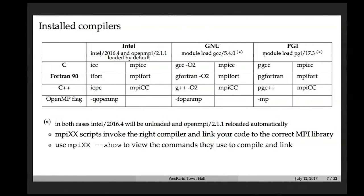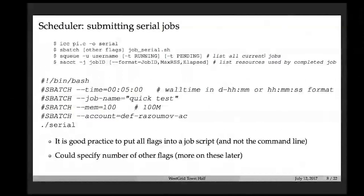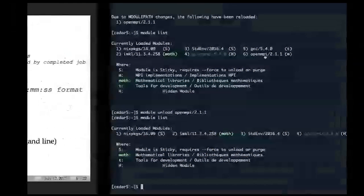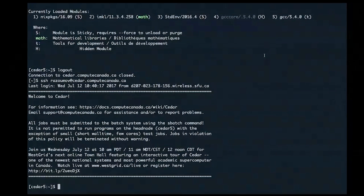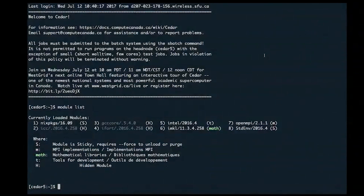To see exactly what an MPI wrapper does under the hood, type 'mpicc -show' and it will tell you exactly which command and flags it uses to link to the right libraries on the system. Now let me go back to the shell — I'll log into Cedar and here are my default modules with Intel loaded by default.